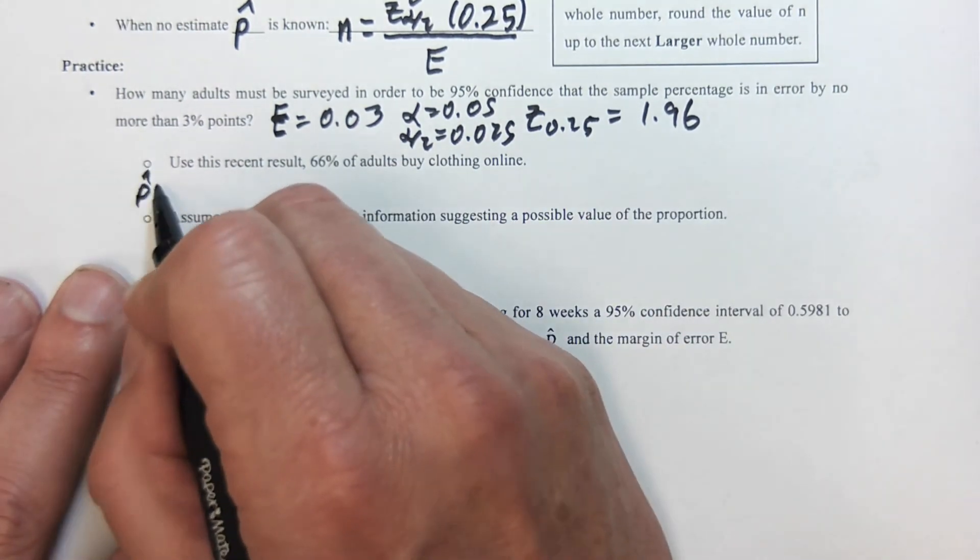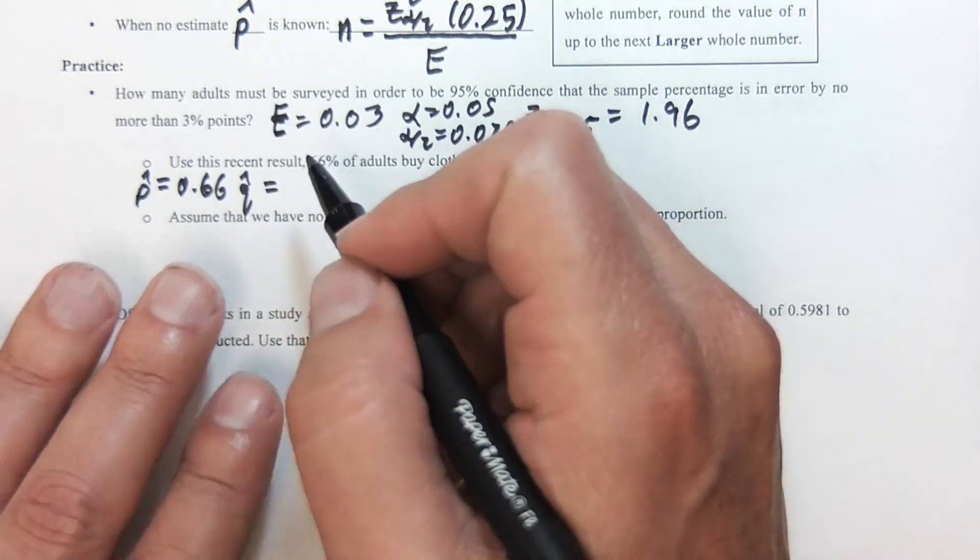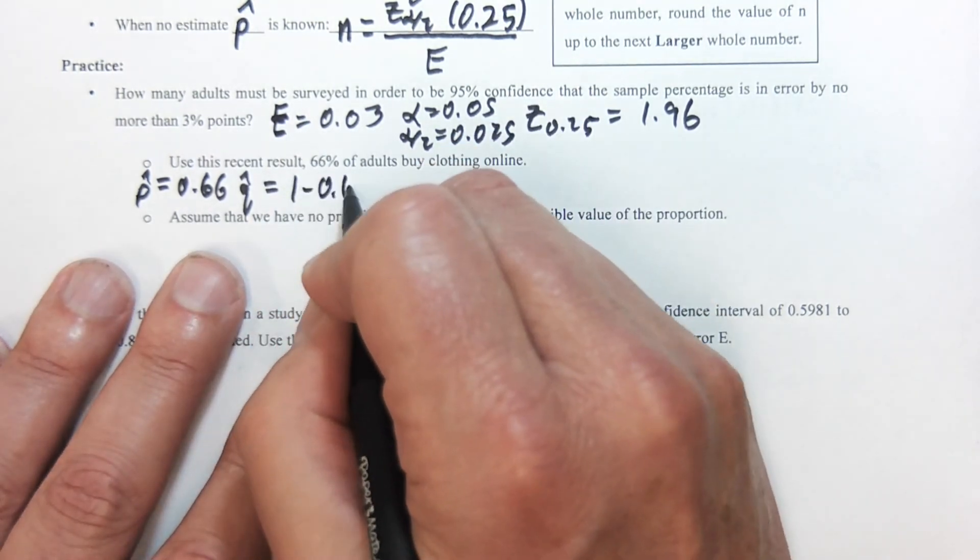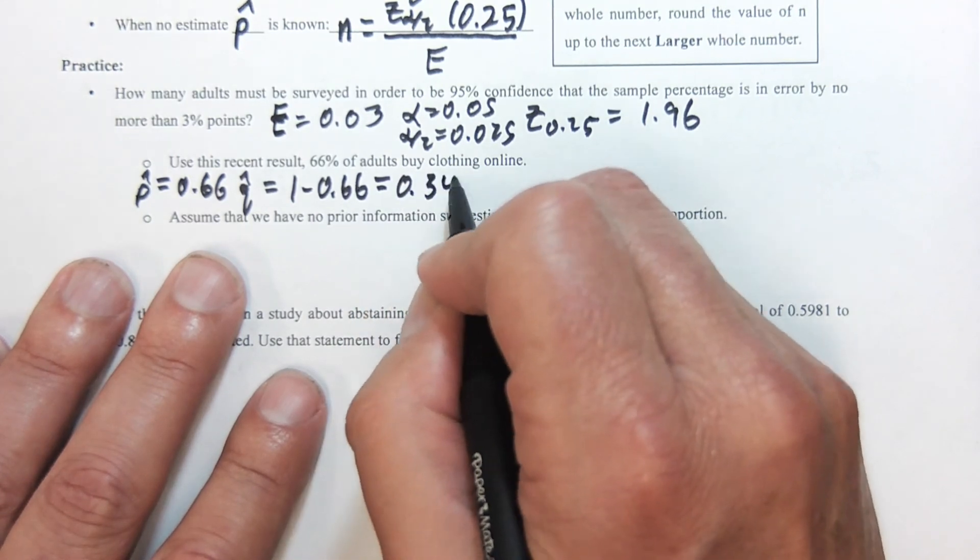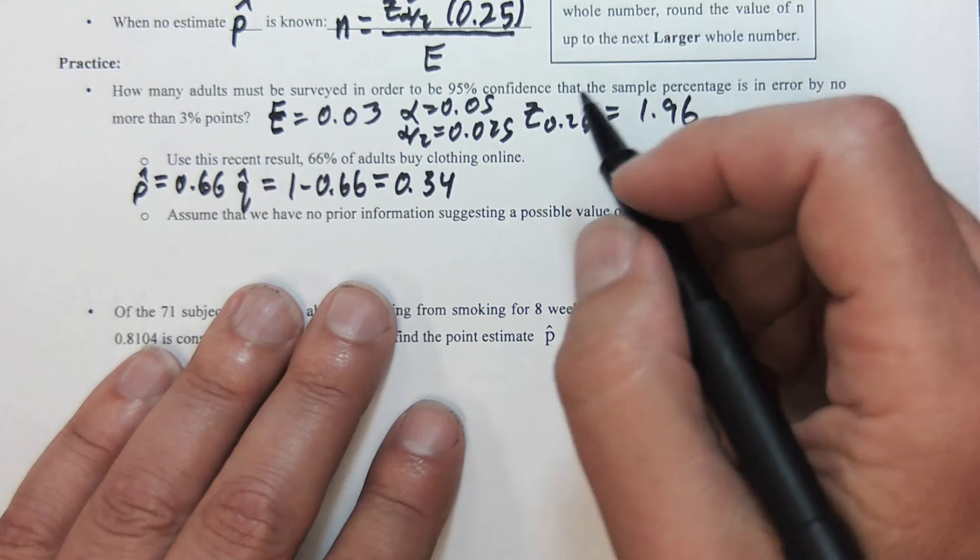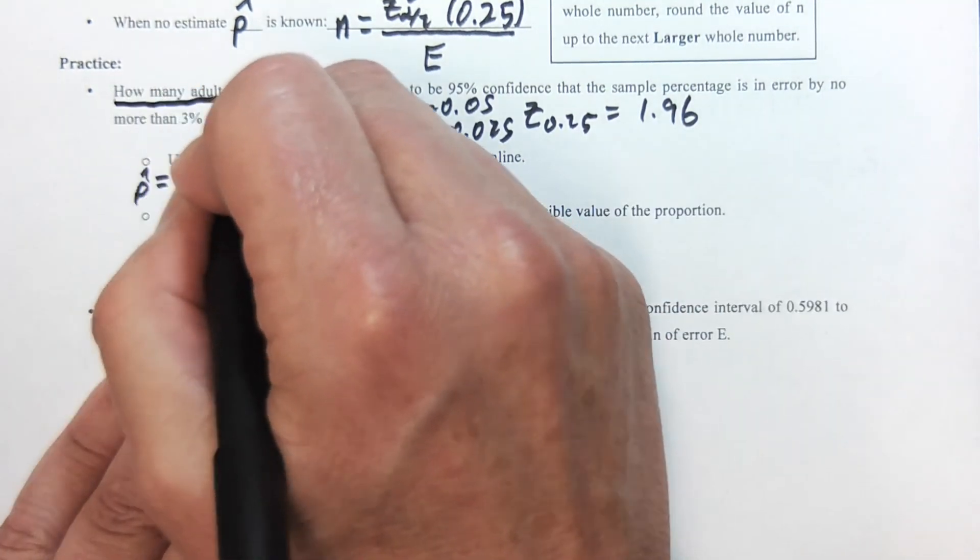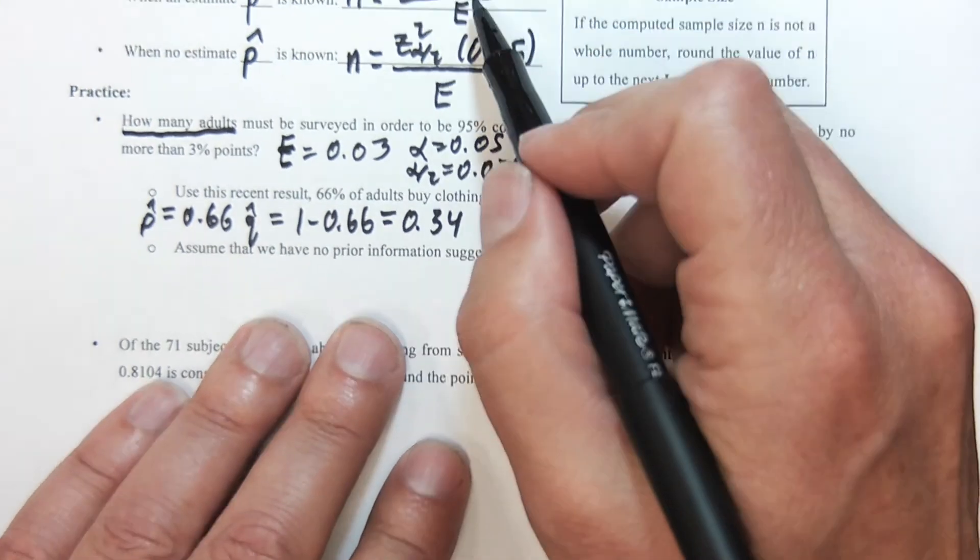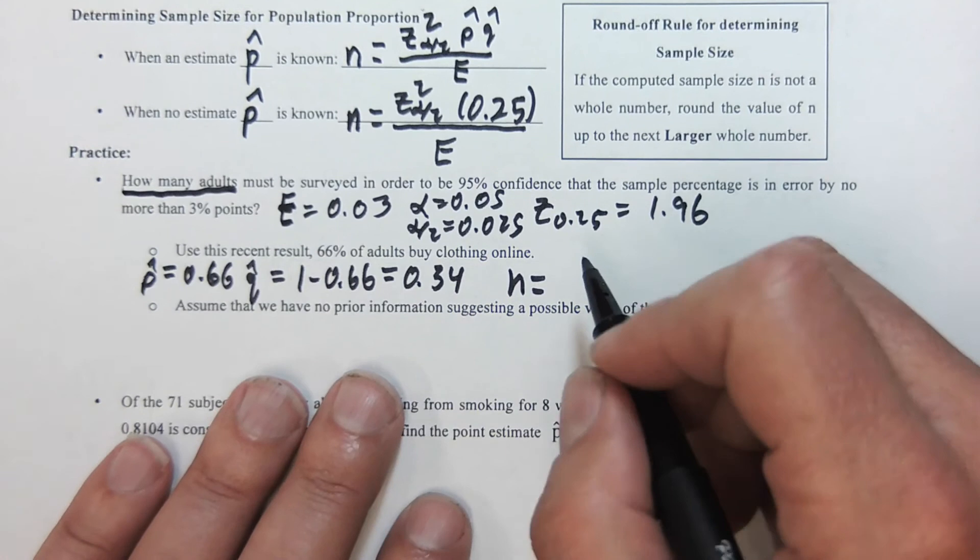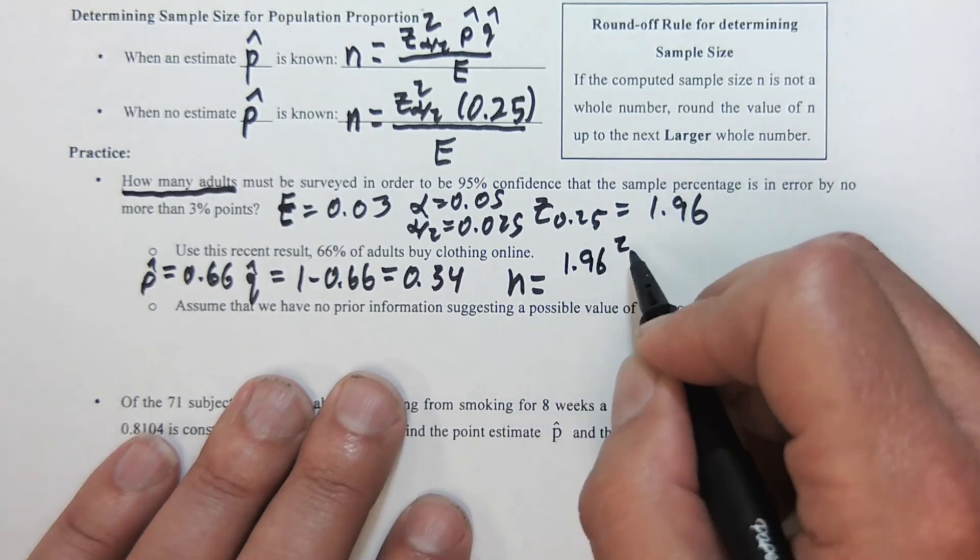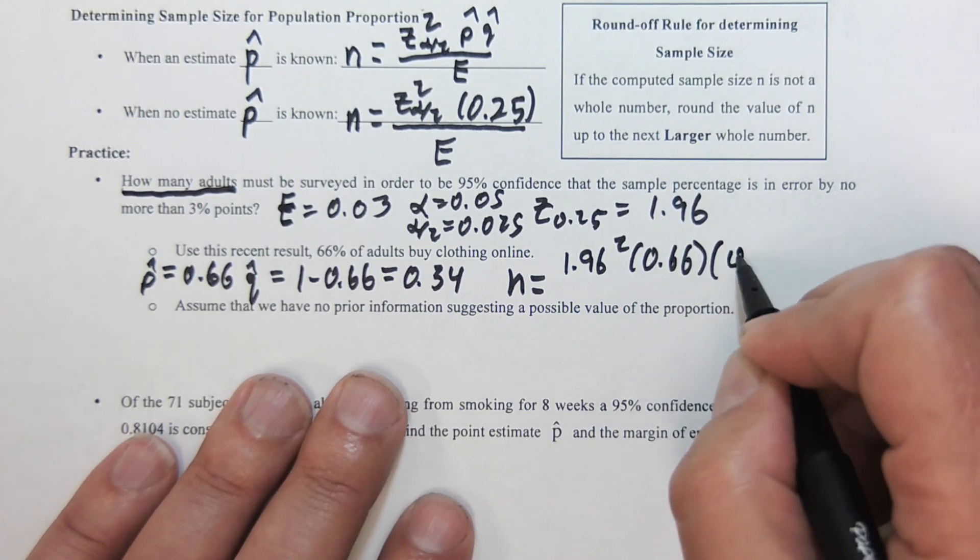A recent poll says that 66% of adults like to buy clothing online, so my p hat is 0.66, q hat is 1 minus 0.66, which is 0.34.